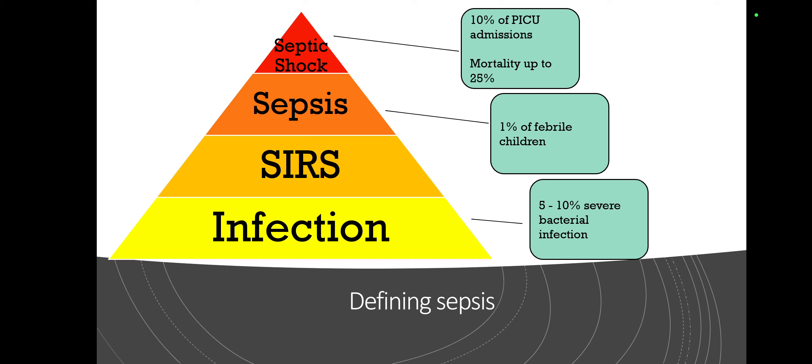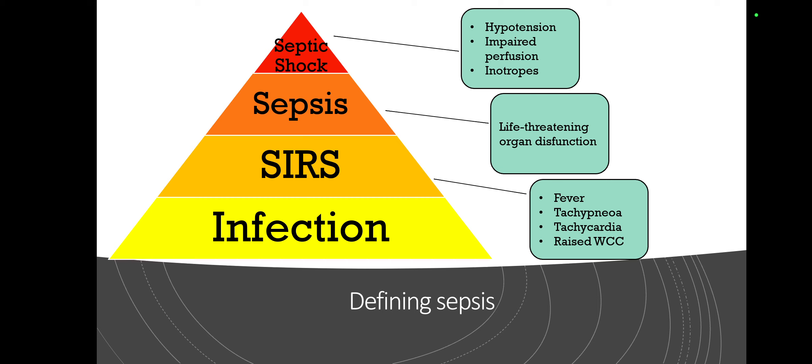Out of these, a group of children develop sepsis, which is about one percent of febrile children generally. So five to ten percent of all infections in children are identified as severe bacterial infections, and about one percent of all kids presenting with fever would be true sepsis. Out of children with sepsis, those who progress to septic shock represent ten percent of PICU admissions and up to 25% of mortalities in children — a situation reflected in many countries and communities.